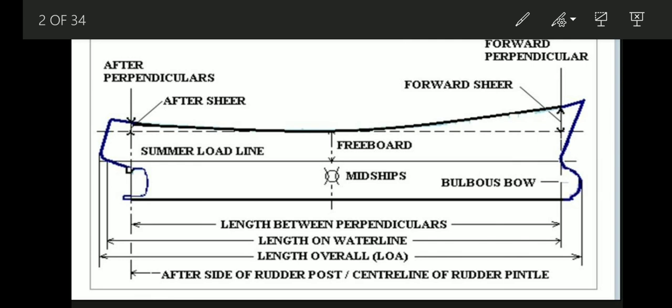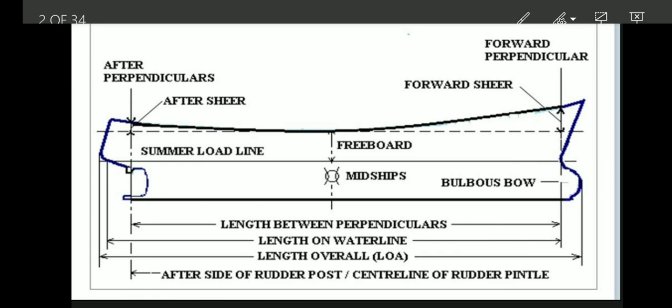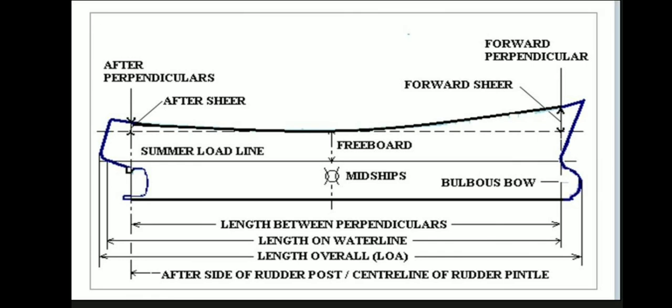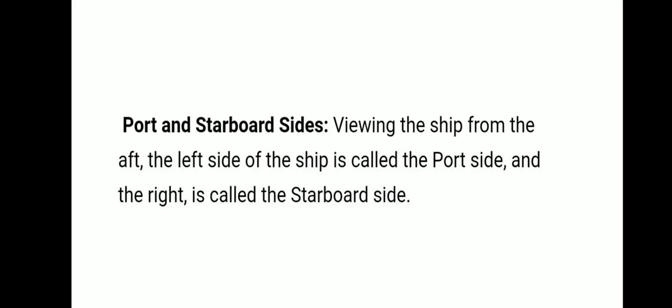First, port and starboard. When we view the ship from the aft side, the left side of the ship will be known as port side and the right side will be known as starboard side. Left side is port side, right side is starboard side, when viewed from the aft of the ship.